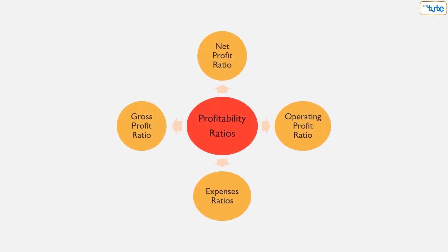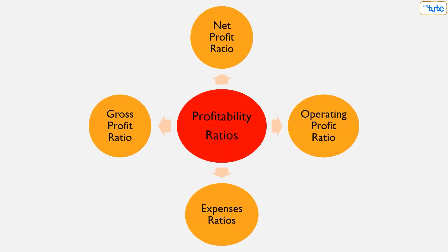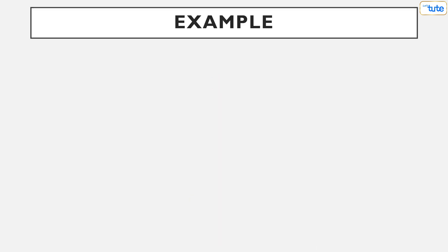So these were the four profitability ratios based on sales. Let us now calculate all these four ratios using an example. Here we have an income statement of Beta Limited for the year 2022.